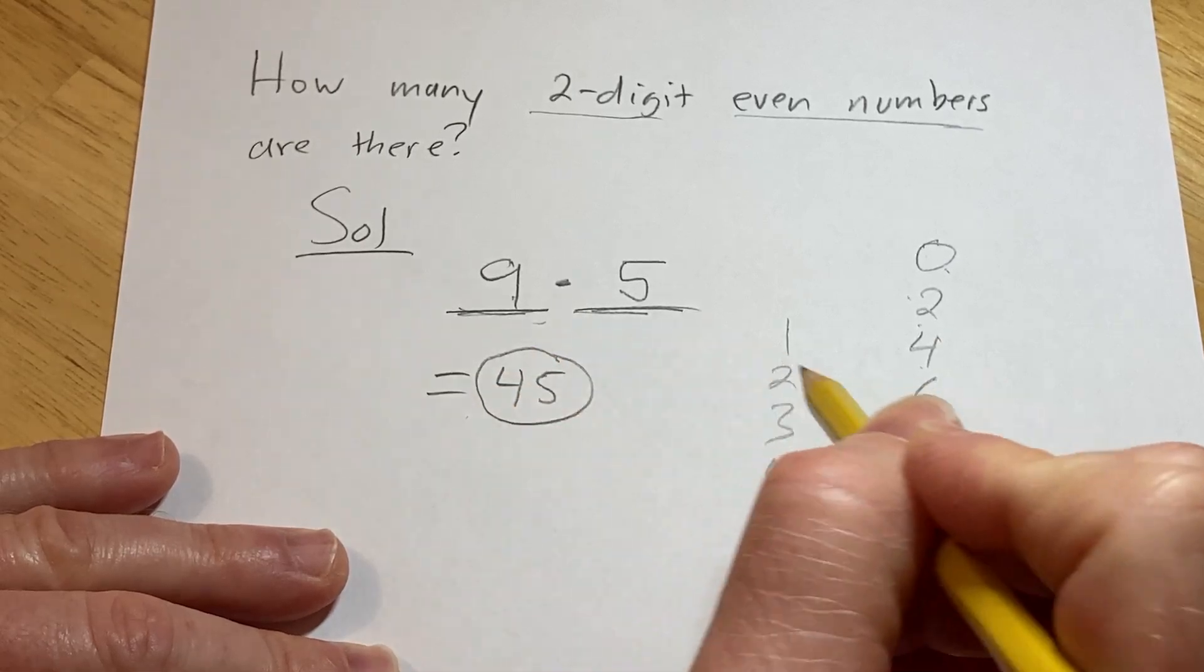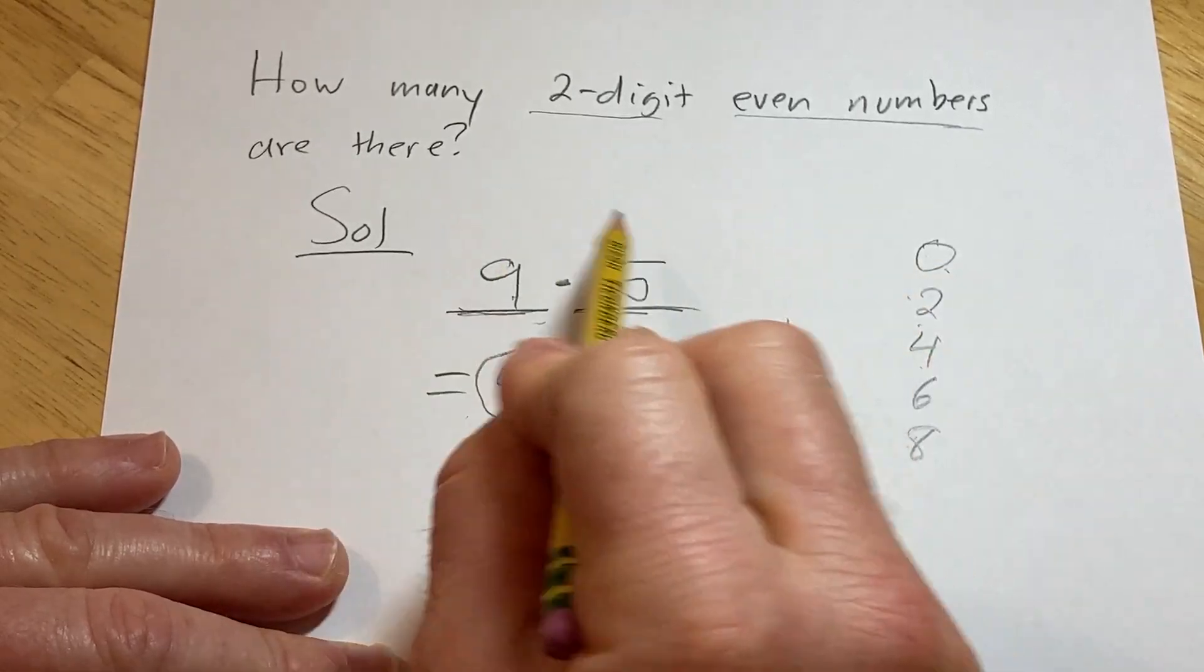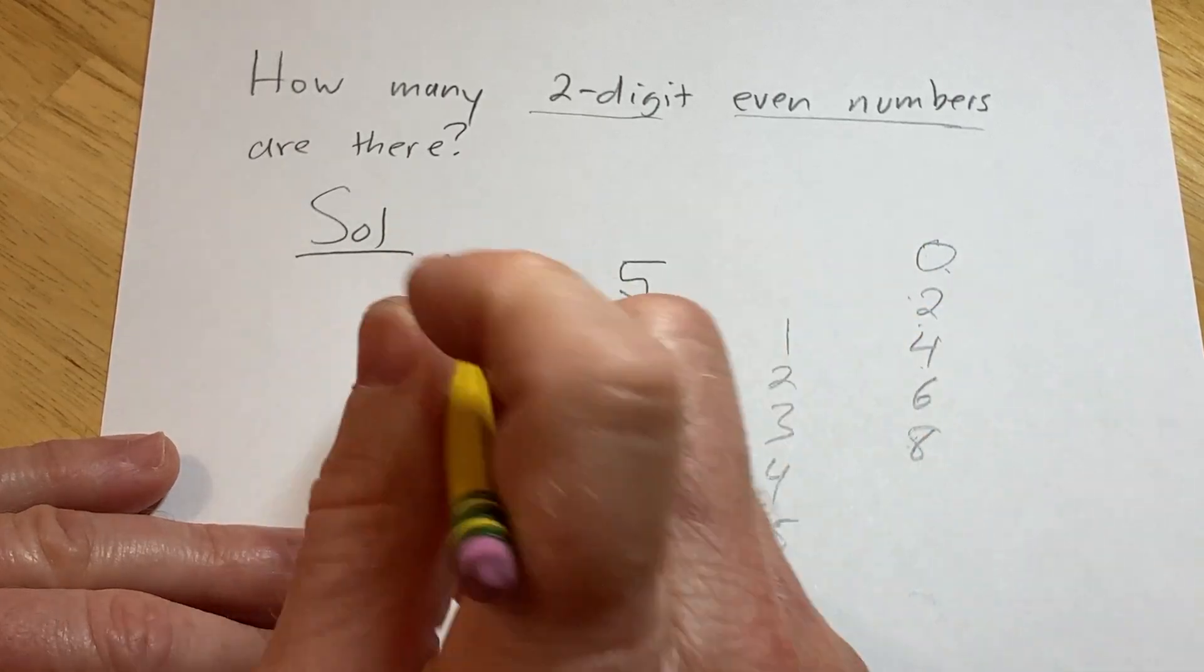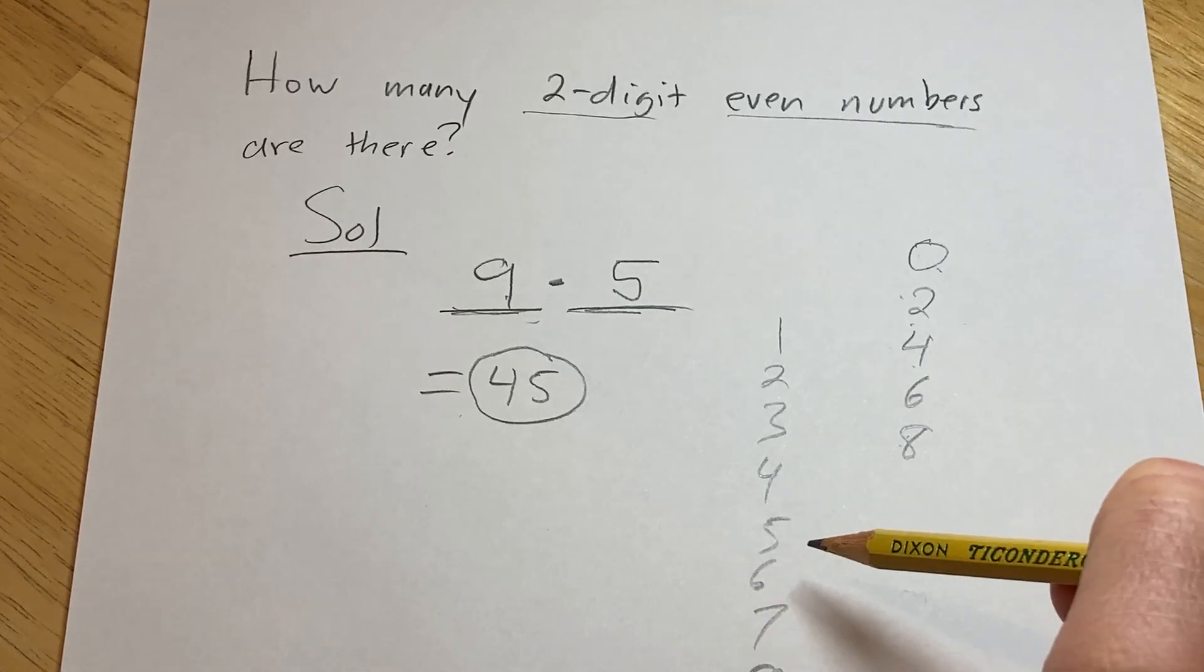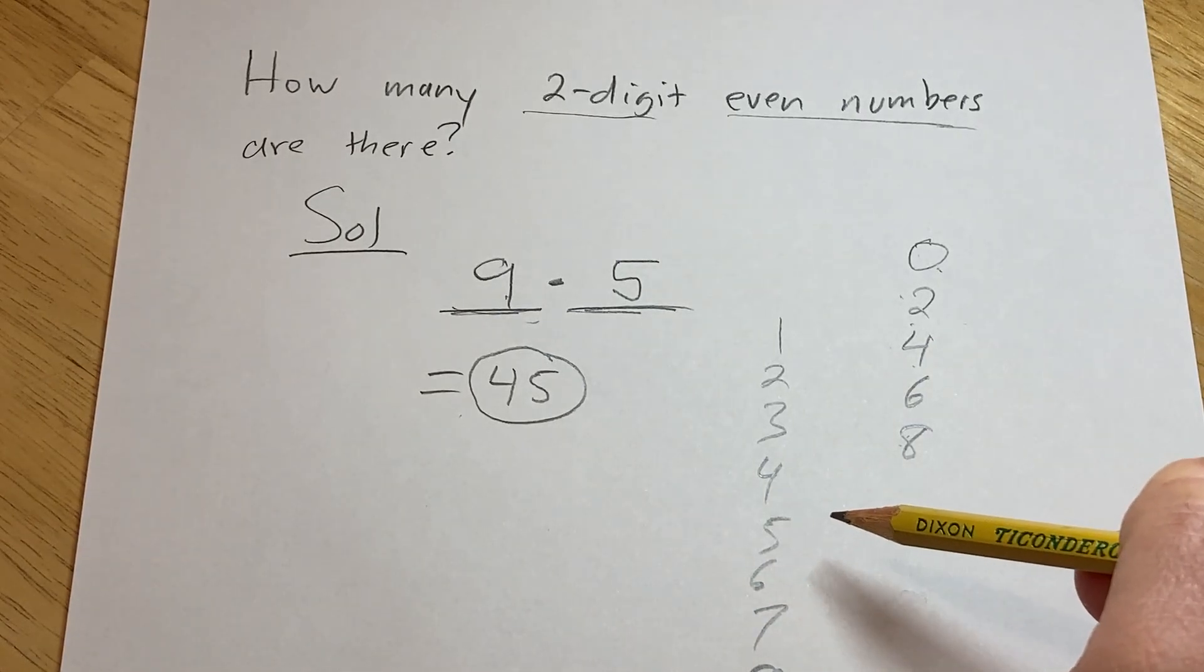So there are 45 ways to construct a two-digit even number. Therefore, there are 45 two-digit even numbers. I hope this video has been helpful to someone out there in the world. Good luck.